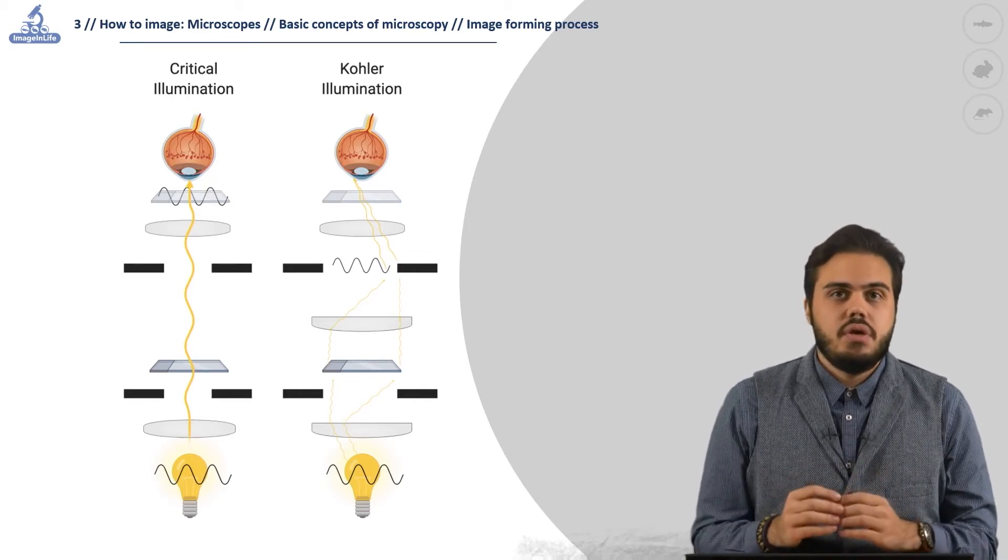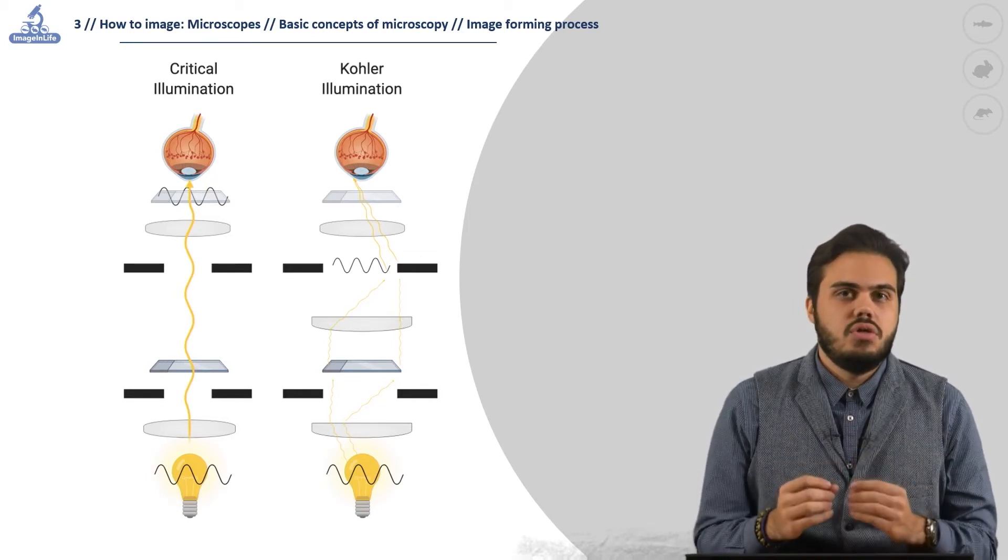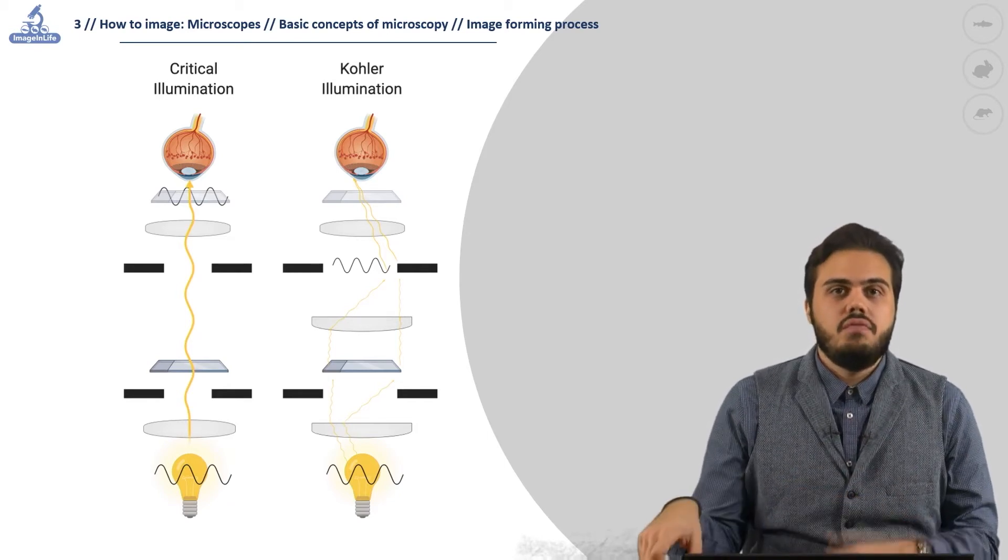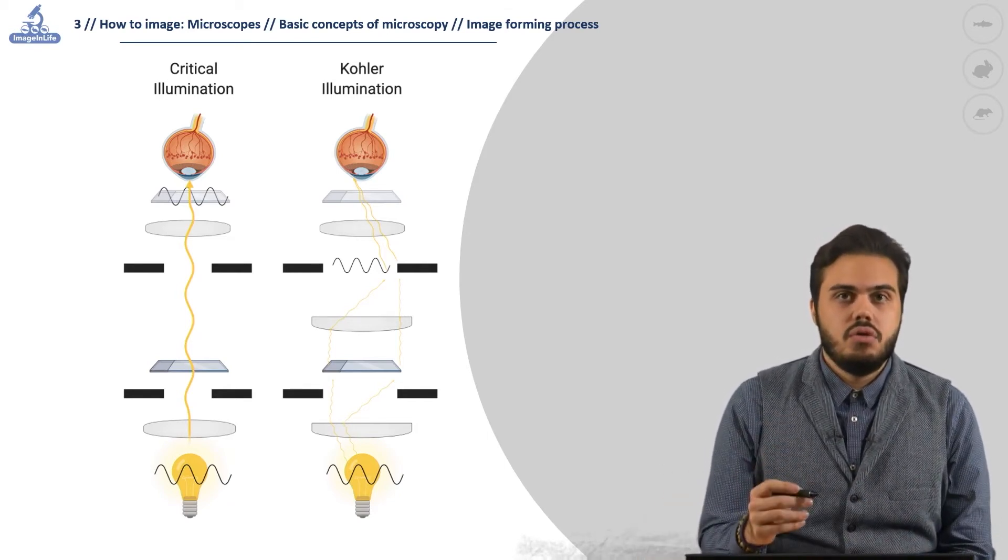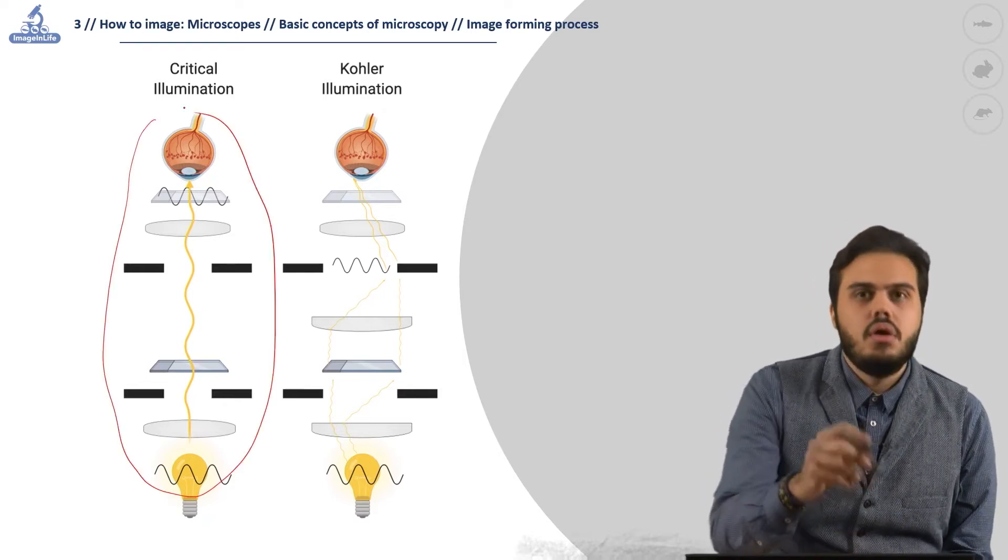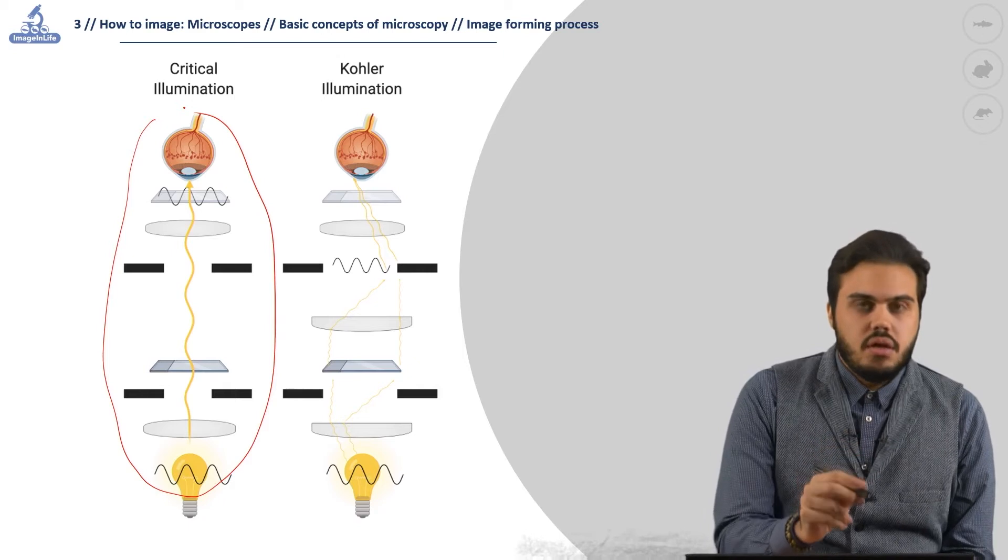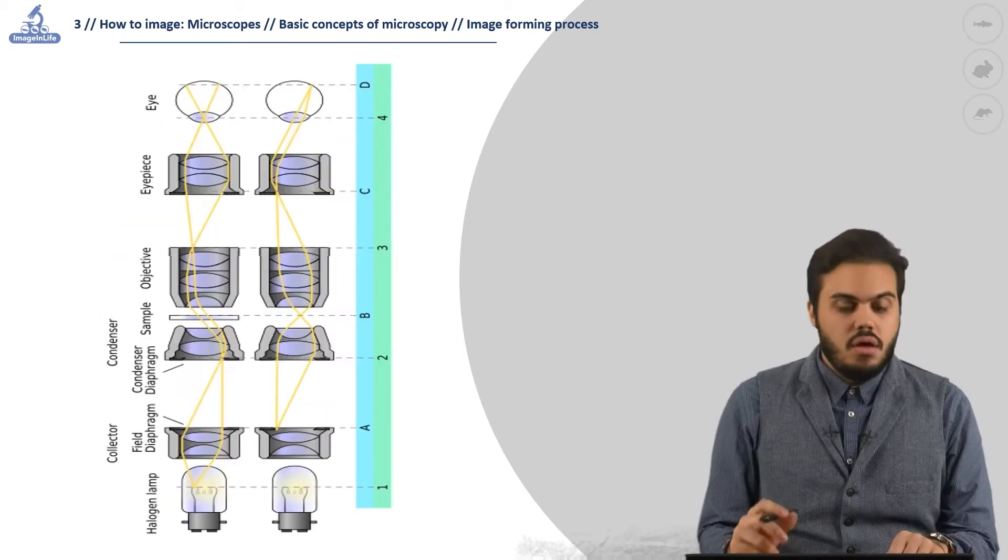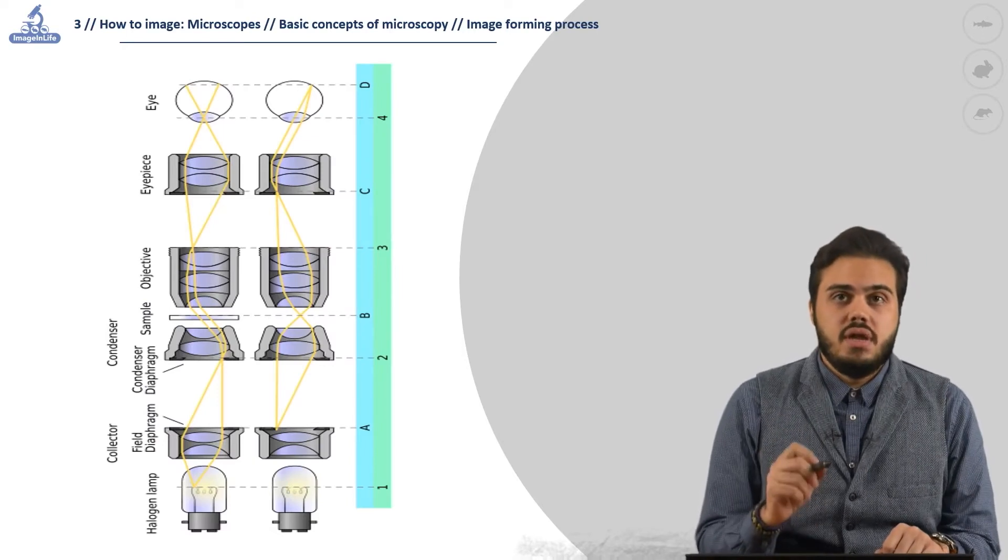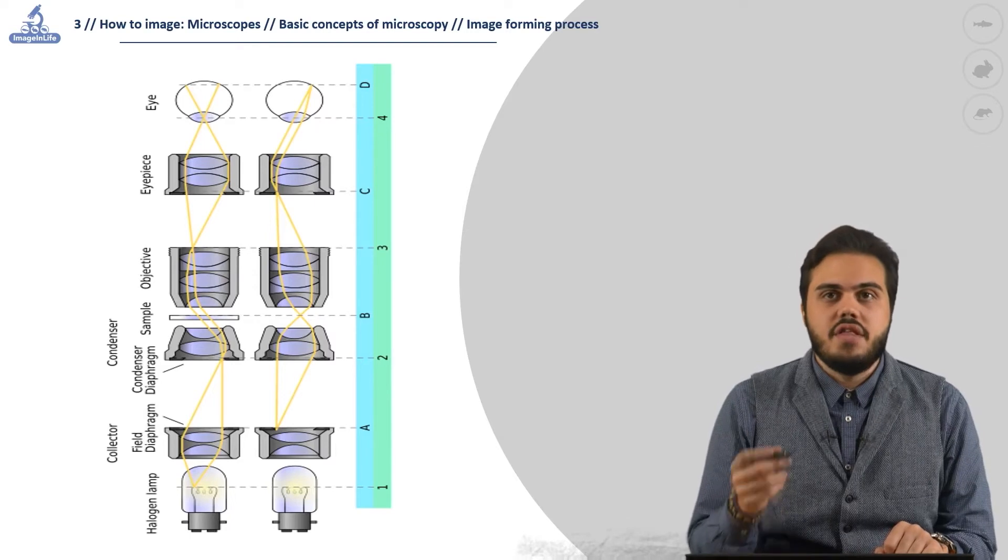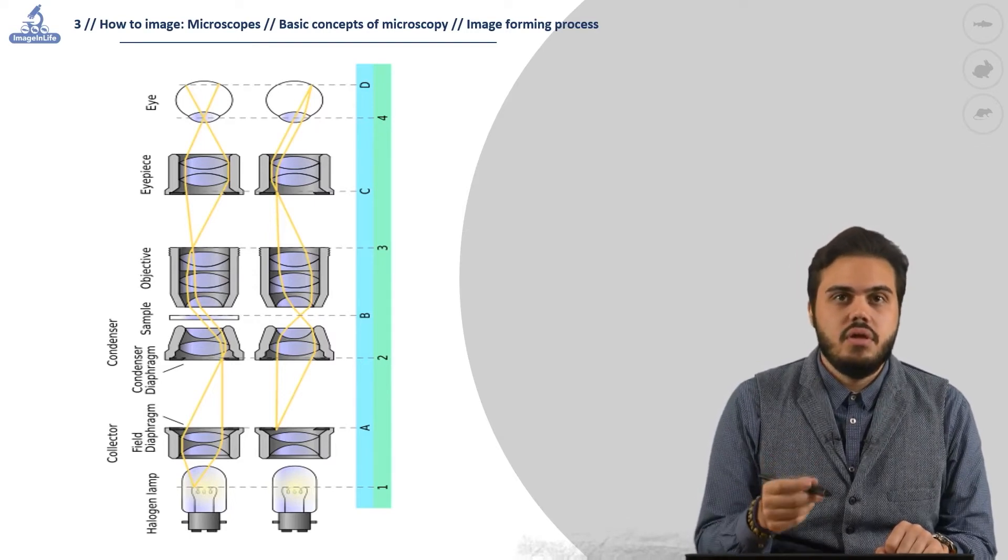A huge step in this direction was the realization of Köhler illumination in 1893. Before the invention of this method of illumination, the most used method was the critical illumination, where the focus plane of the specimen and the lamp are in the same plane. The Köhler illumination places the light source image and the specimen in two different focal planes and the specimen itself is illuminated in a uniform way.